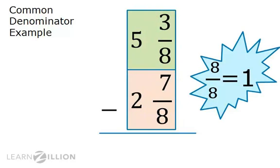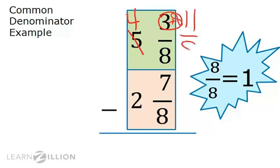It will be easier to subtract the 7 eighths if there are more eighths in the fraction above it. We can regroup from the 5 — remember, 8 eighths equals 1 — so if we borrow a 1 from the 5, that leaves 4 in the ones place. The 8 eighths plus the 3 eighths create 11 eighths.